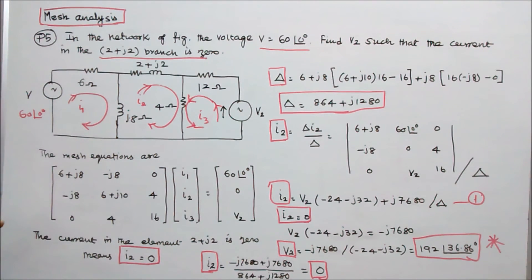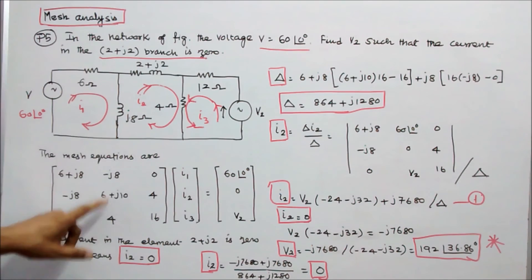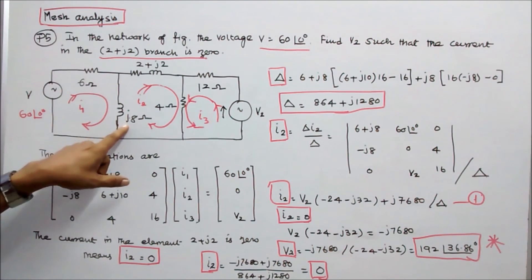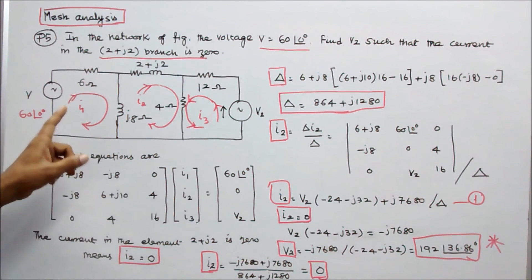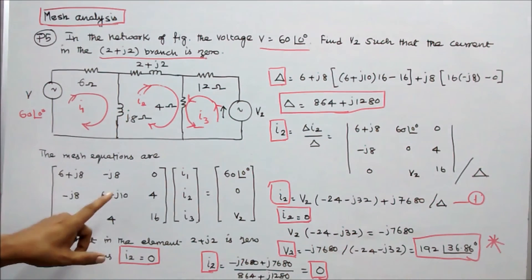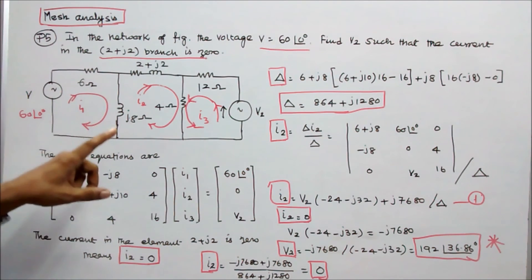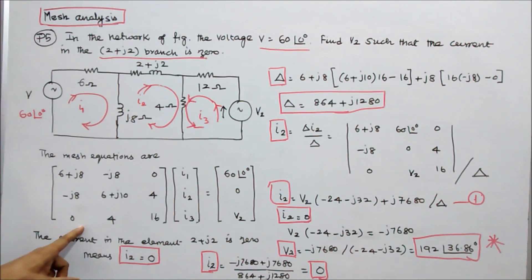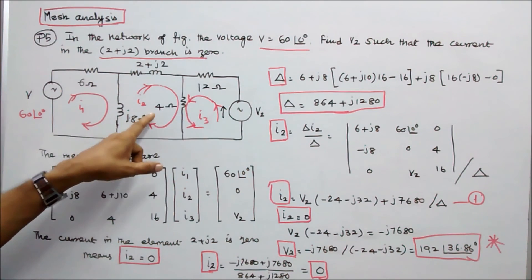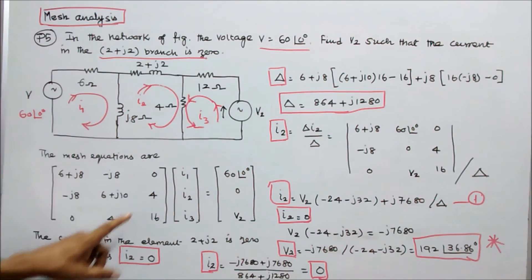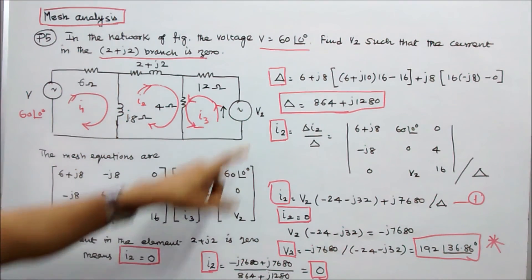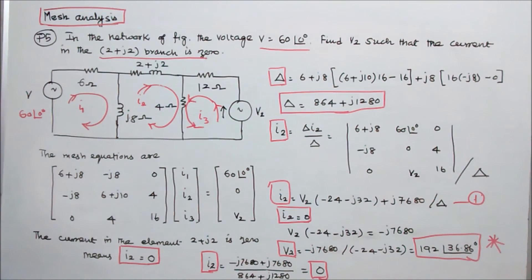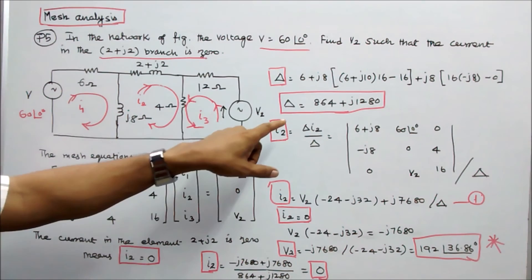Forming the mesh equations, the diagonal elements are: loop 1 = 6 + j8, loop 2 = 4 + 2 + j8 + j2 = 6 + j10, loop 3 = 12 + 4 = 16. The element common to loops 1 and 2 is j8 (off-diagonal entry minus j8). No element is common to loops 1 and 3 (entry = 0). The element common to loops 2 and 3 is 4, with same current direction (entry = plus 4). The source vector entries are: 60 angle 0 for loop 1, 0 for loop 2, and V2 for loop 3.